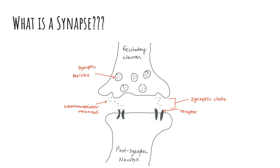A synapse, also known as a neuronal junction, is a space between two neurons that allows an electrical or chemical signal, such as a neurotransmitter, to pass from one neuron to the next. A neurotransmitter is a chemical messenger used to transmit messages between neurons. They are released when an electrical signal reaches the end of one neuron, where it converts to a chemical signal by releasing neurotransmitters into the synapse, which then bind to receptors on the next neuron to pass on the message.